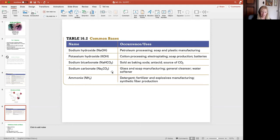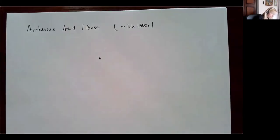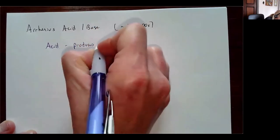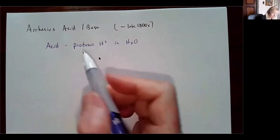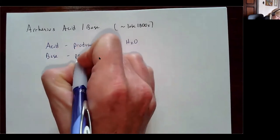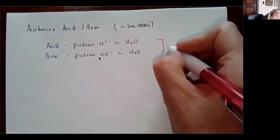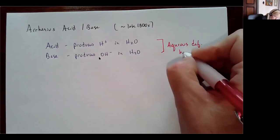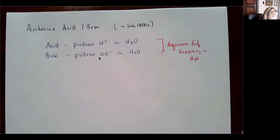That brings us to defining acids and bases. There are three ways to define an acid-base. The first is the Arrhenius acid-base definition — the oldest, introduced in the late 1800s. An Arrhenius acid is simply something that produces hydrogen ion in water, and an Arrhenius base is any substance that produces a hydroxide ion in water. This is really an aqueous definition — it applies specifically in water.